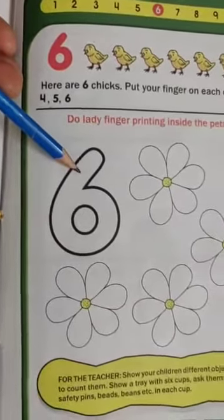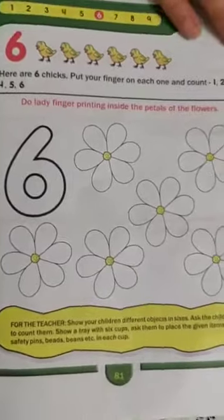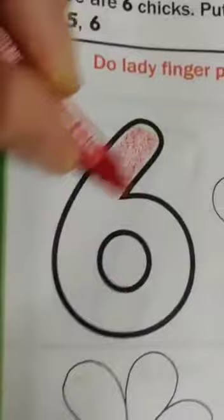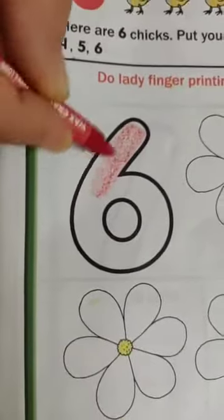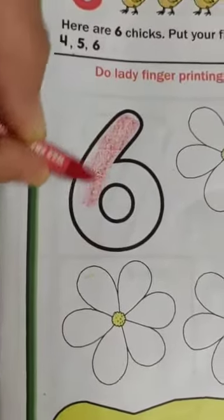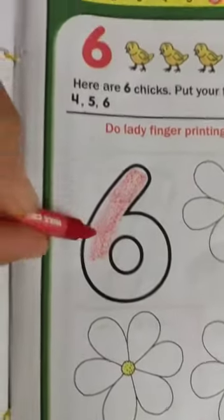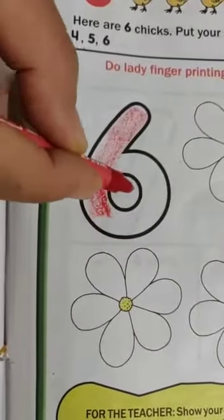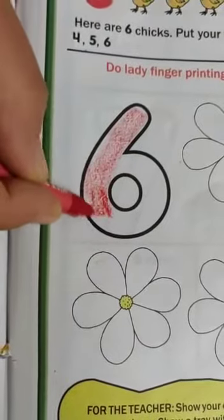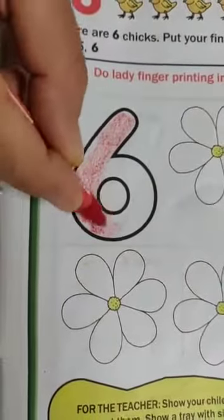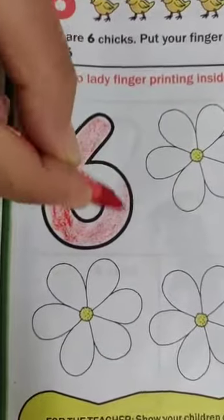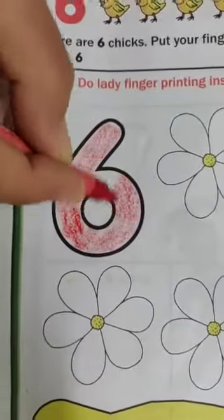You have to color in this number like this. You may take red color, because here it is red color. Don't color inside this 0. You have to color it like this. Slowly, slowly. Like this.